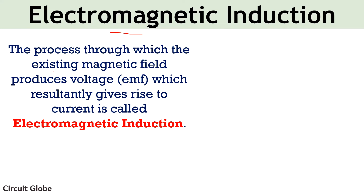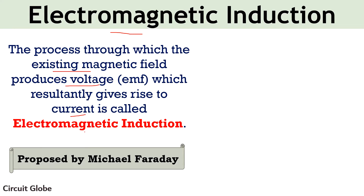Electromagnetic induction is a process where an existing magnetic field induces voltage and this voltage resultantly gives rise to current in the circuit. We all are aware of the fact that when current flows through a circuit, then magnetic field is generated. This varying magnetic field induces another current in the circuit. The phenomena of generating electric current by varying magnetic field is called electromagnetic induction. This phenomena was proposed by Michael Faraday.